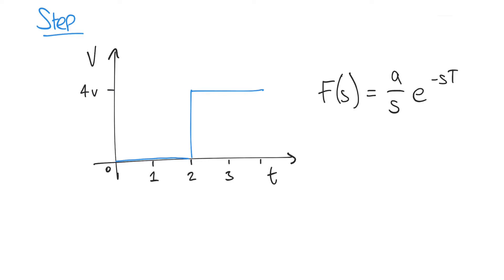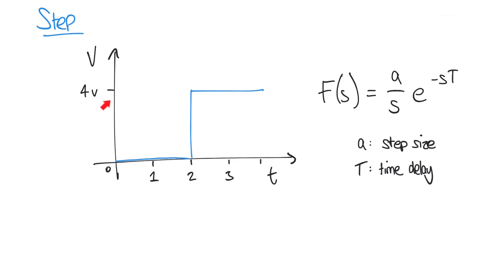In the s domain, the step function looks like this: f of s is equal to a over s multiplied by e to the power minus s t. Here, a represents the size of the step and t is the time delay. So in our example, a equals four because the step size goes from zero to four, and t equals two for the time delay. Our input can therefore be expressed in the s domain as four over s multiplied by e to the power minus two s.